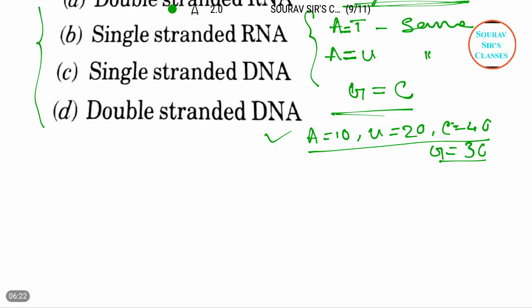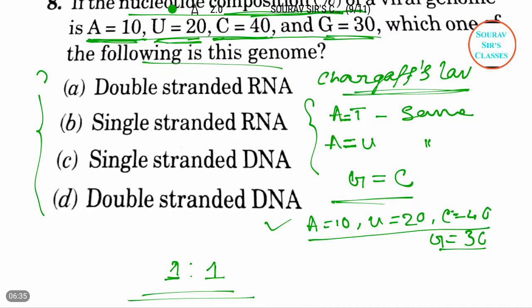But it has to obey the rule. Chargaff says that organisms have one-to-one purine-pyrimidine bases. As in this question, each base equation is different.